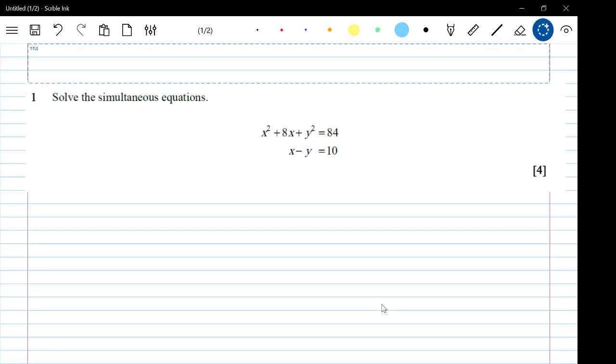Okay, so here we are. This is question one from the secure sample paper, the public sample paper. Solve the simultaneous equations: x squared plus 8x plus y squared equals 84, and x minus y equals 10.